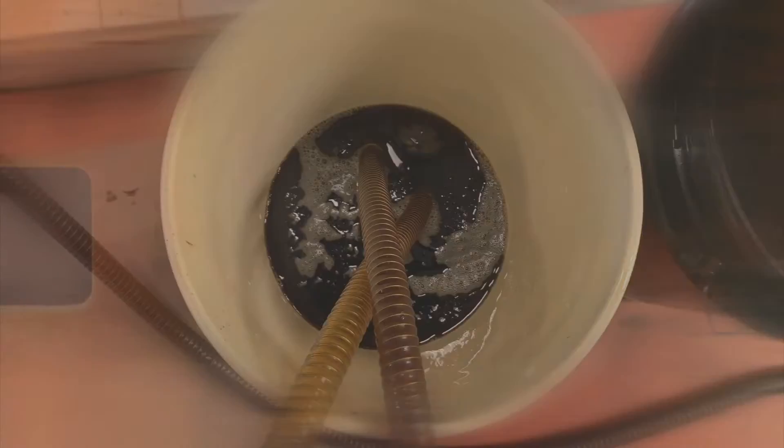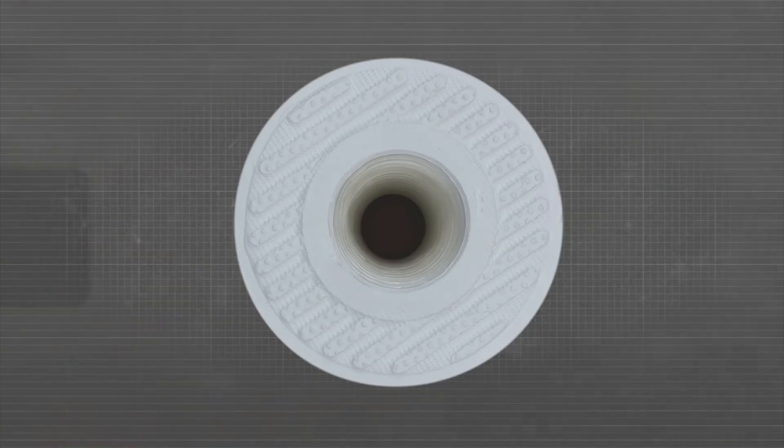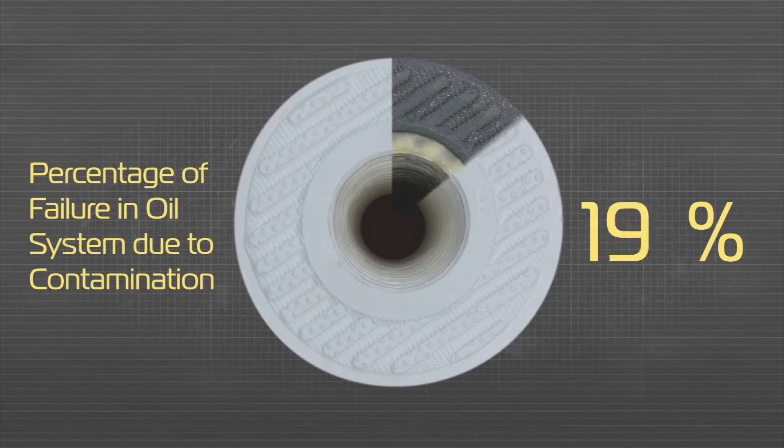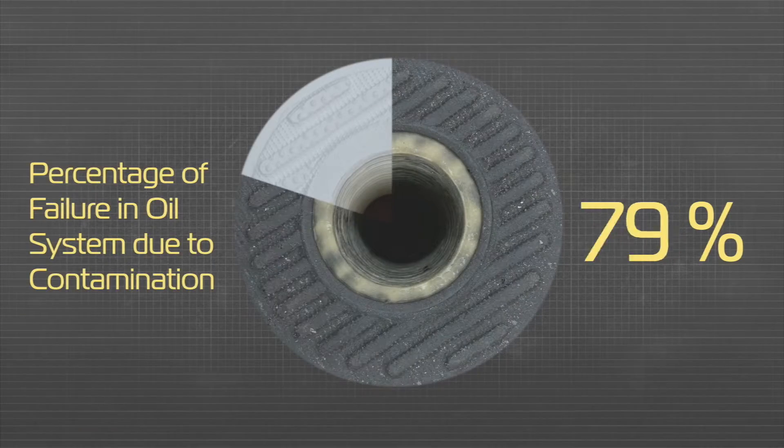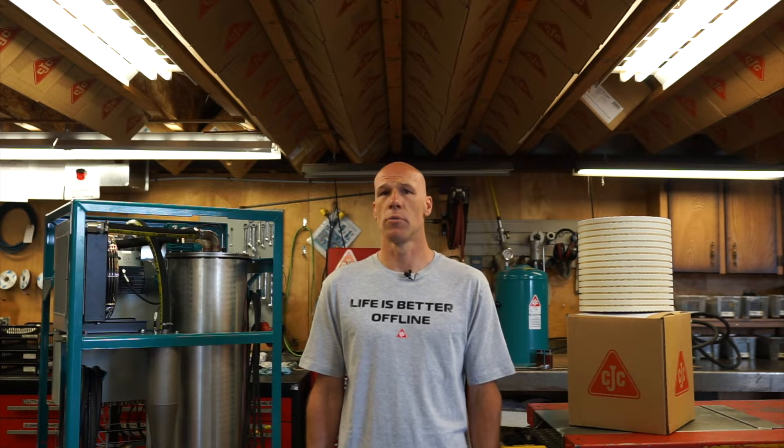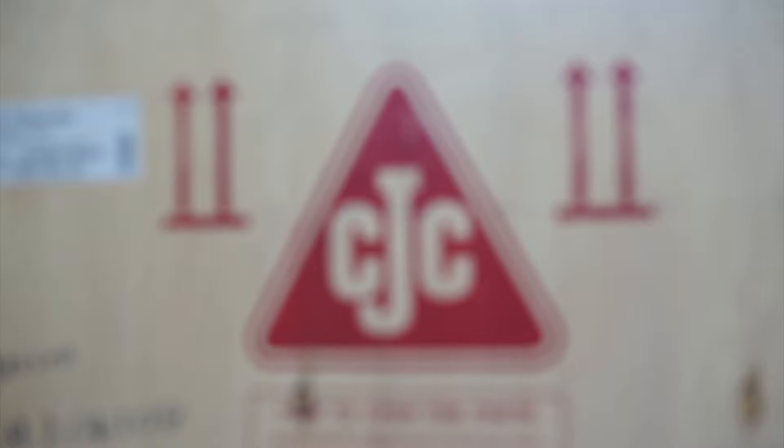Oil contamination accounts for 80% of all failures in an oil system, so we know filtering the oil is important. But most oil lubricated machinery already comes with a filter, so what makes one filter different from another?